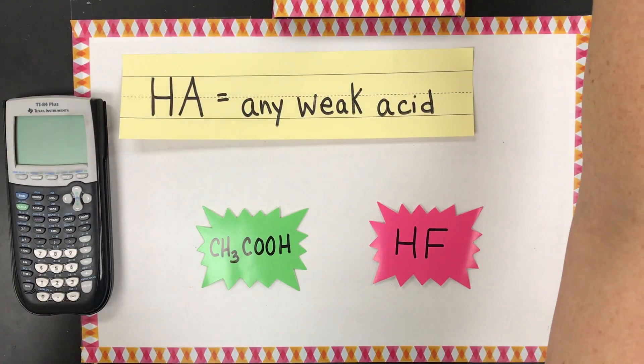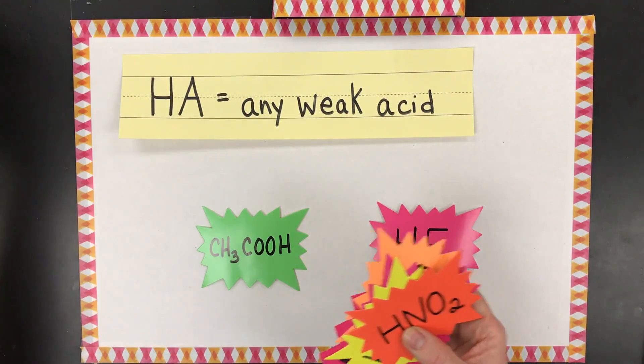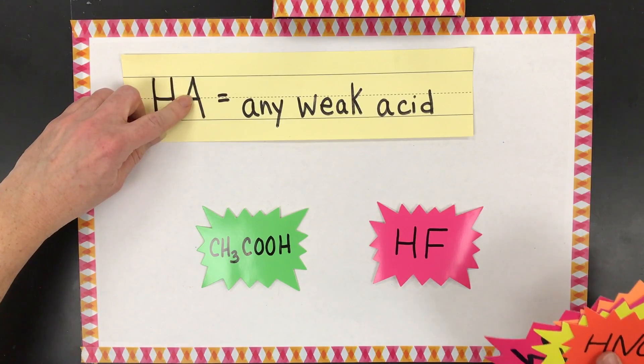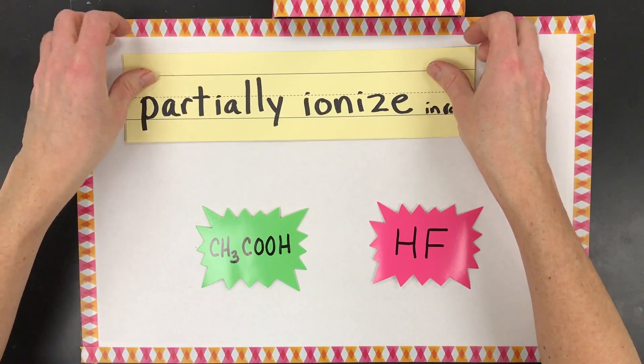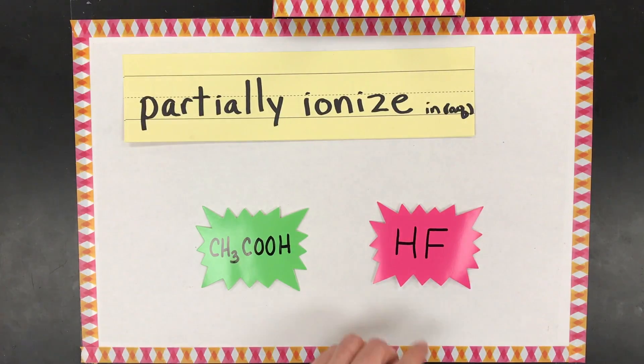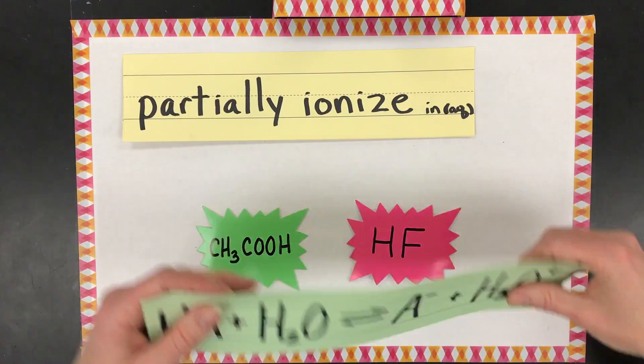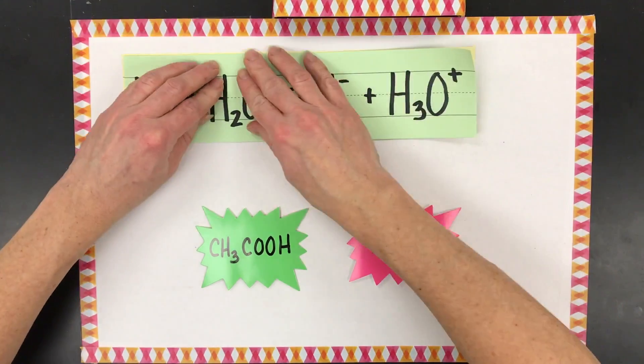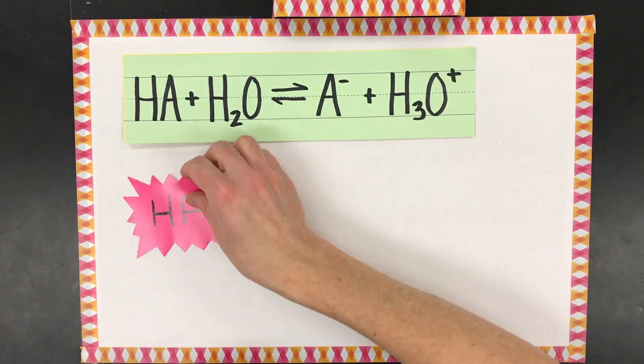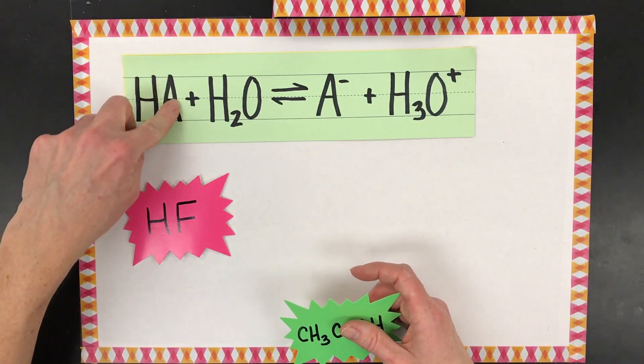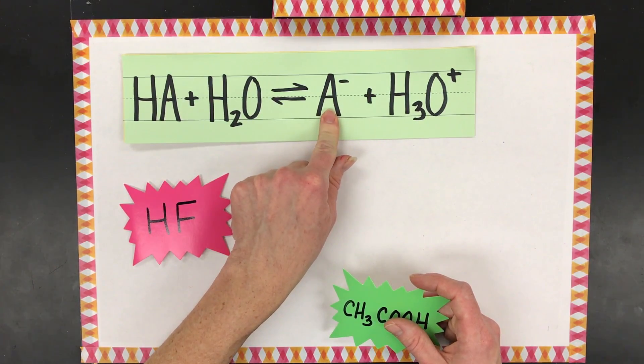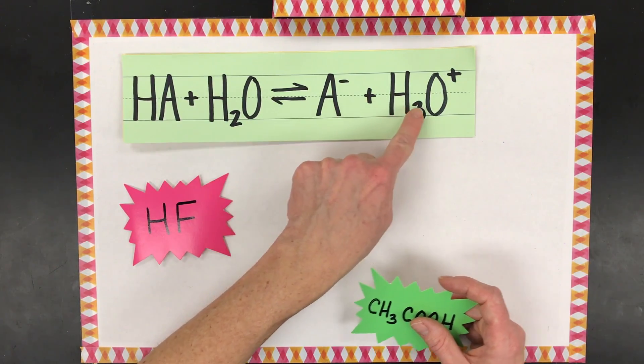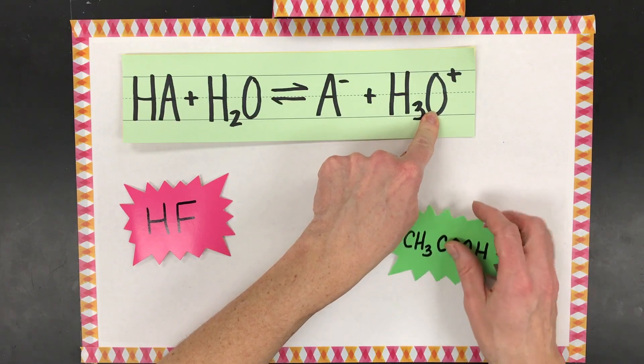First, HA is any weak acid. Don't get worried by that, it's just some kind of anion. Next, weak acids only partially ionize in water. So what does that mean? So here are the two that we're going to use. If I call them HA, especially HF kind of looks like that, you're just saying any anion. When it hits a water molecule, only some of them are going to turn into anions and produce hydronium ions in water.